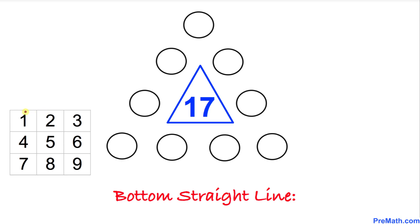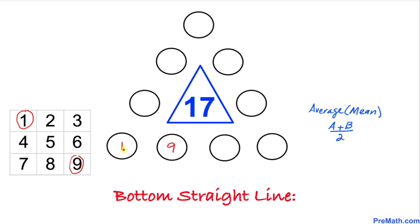For the bottom straight line, we look at the very first and last numbers: 1 and 9. We place 1 on one end and 9 on the other. Then we find the average of these two numbers using (a + b) / 2: one plus nine divided by two gives us five, so 5 goes in the middle position.